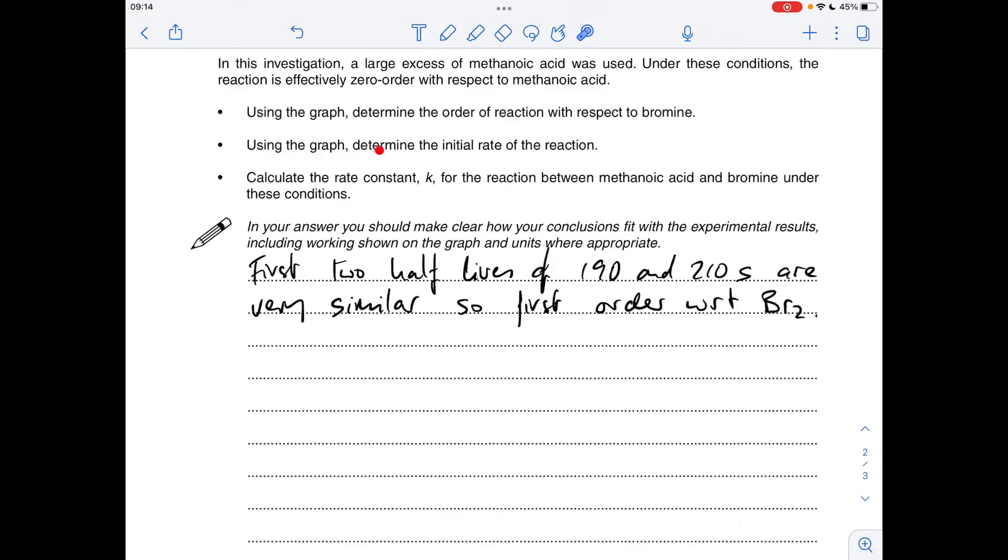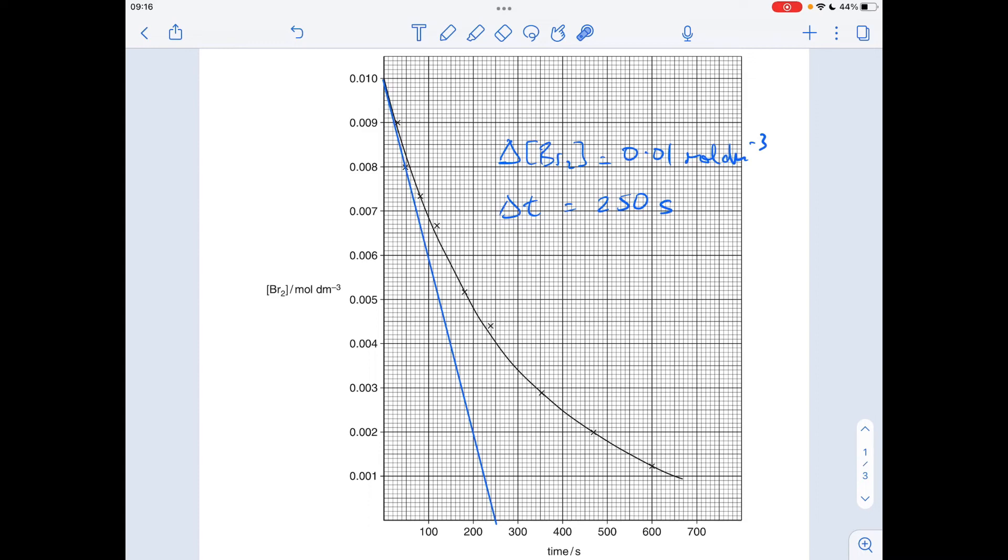We're now going to use the graph to determine the initial rate of the reaction. So to get the initial rate, we draw a tangent to the curve at the start of the reaction, so see that's mine there.